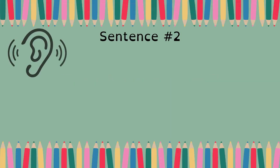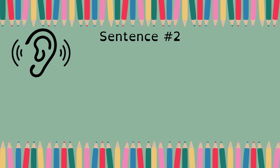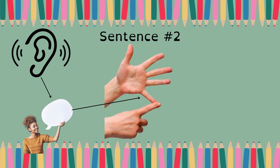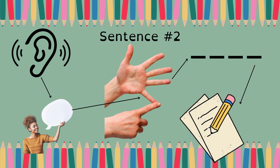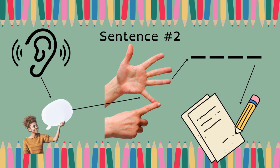Okay, sentence number two: They were in math class. Say it with me: They were in math class. Count it: five words. Draw five lines: one, two, three, four, five. Write it: They were in math class.